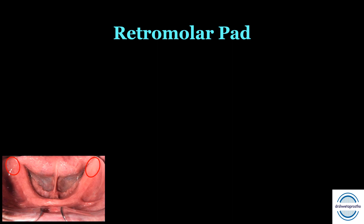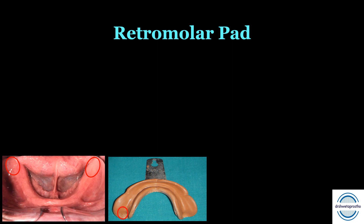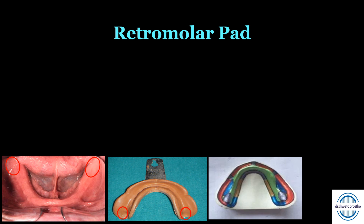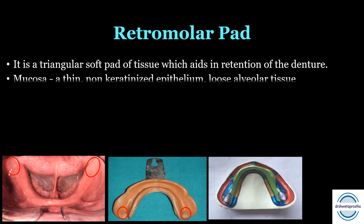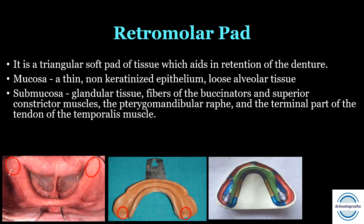Moving posteriorly is the retromolar pad — a triangular soft pad of tissue which helps in retention of the denture. It is obtained as retromolar fossa in the impression. Its mucosa is composed of thin non-keratinized epithelium, and its submucosa contains glandular tissue, fibers of buccinator and superior constrictor muscles, the pterygomandibular raphe, and the terminal part of the tendons of temporalis.